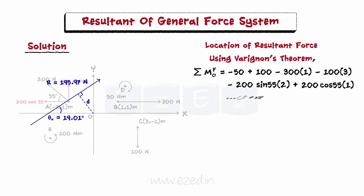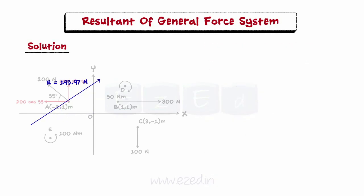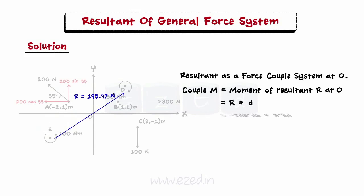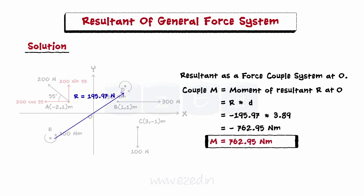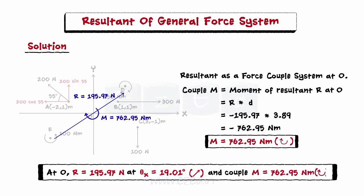We will first find the summation of moments of all forces about the point O. On equating this with the moment of resultant about the point O, we find that the resultant acts a distance of 3.89 meters to the left of O. Since the resultant force is desired to be located at O, we need to shift the resultant from its present position to O. This will require introducing a couple M in the system, which is equal to the moment of the resultant about point O. On simplifying, this is calculated to be 762.95 newton meters in clockwise sense. Therefore, the given system can be replaced at O by a single force resultant of 195.97 newtons, acting at an angle of 19.01 degrees, and a clockwise couple M of 762.95 newton meters.